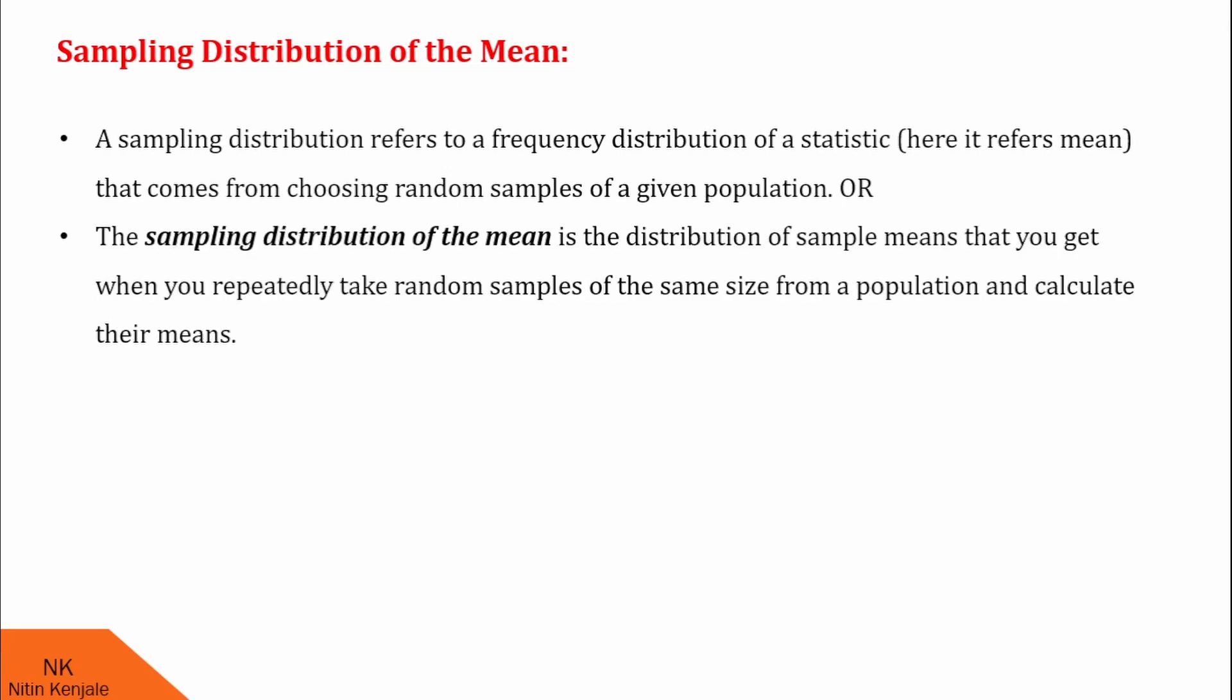Let us make it more simple. The sampling distribution of the mean is the distribution of sample means that you get when you repeatedly take random samples of the same size from a population and calculate their means.